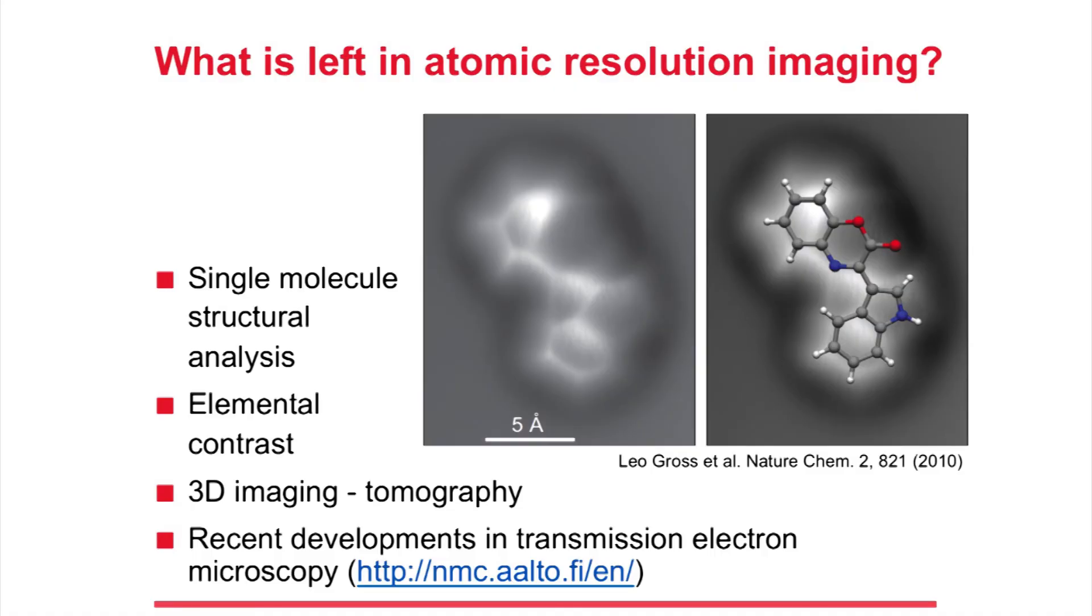After we published the paper on pentacene, some marine biologists approached my colleagues in IBM Zurich. They said there's this bacterium that lives at the bottom of the ocean and it produces some metabolites. One of them we can't tell how it looks like - we have this molecule that based on the analysis can have one of four different possible structures but we can't tell which one it is. My colleagues put it on a surface and looked at it with AFM. Here is an AFM image of this molecule, and when you overlay the structural formula you can tell which one of the possible structures is the correct one. You can do single molecule structural analysis with the AFM.